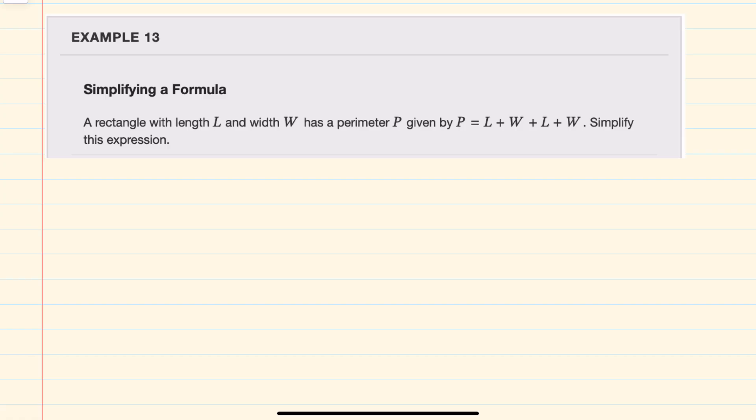We're asked to simplify the formula here for the perimeter of a rectangle, and the formula is given as P equals L plus W plus L plus W, just adding up the lengths and widths of the rectangle.